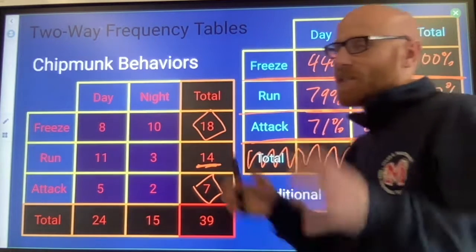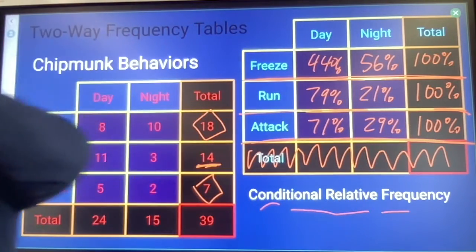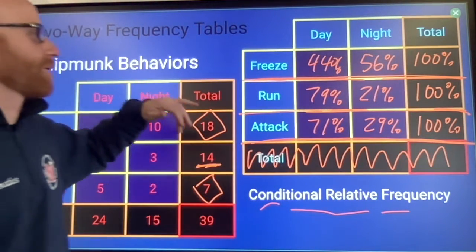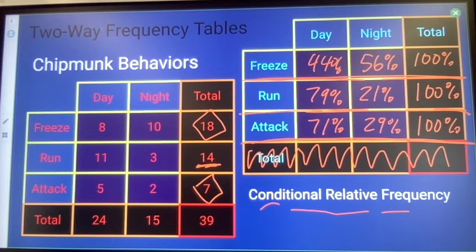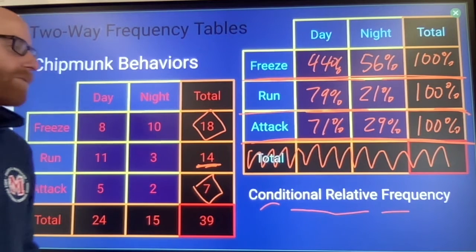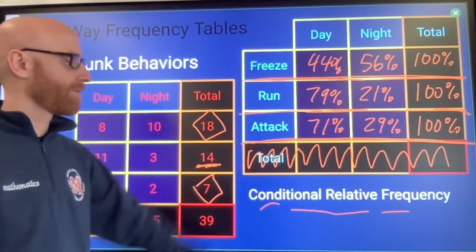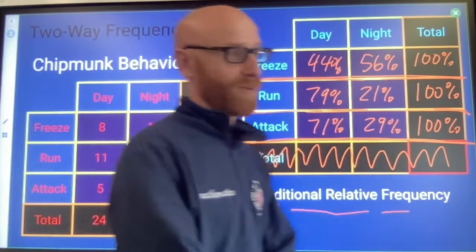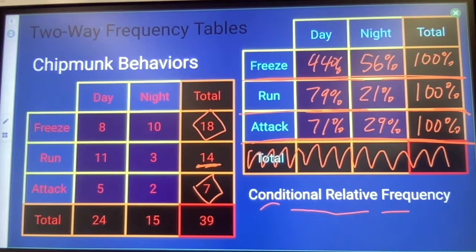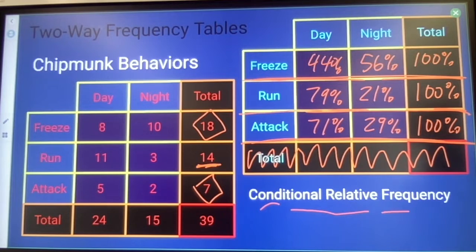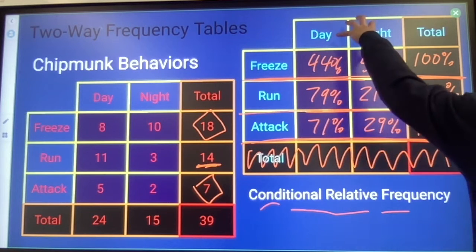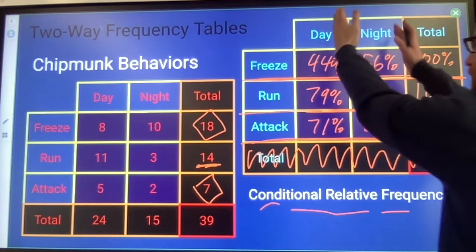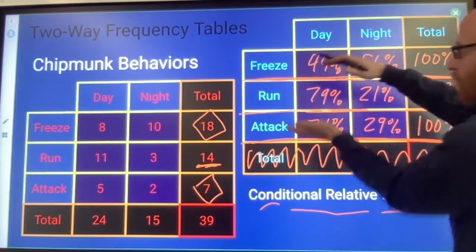The different types of conditional relative frequency let you isolate one variable to explore how the other variable lines up relative to it. You can either make a regular relative frequency table to look at joint and marginal frequencies, or you can make a conditional relative frequency table. When making a conditional relative frequency table, your condition is either columns — to compare day and night separately — or rows, to compare responses separately.